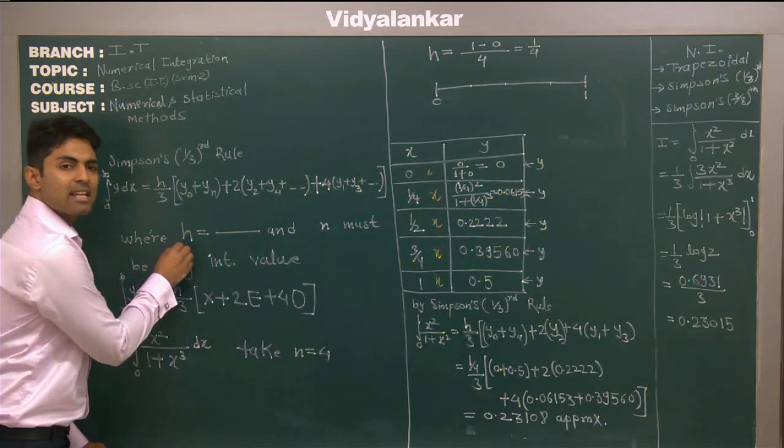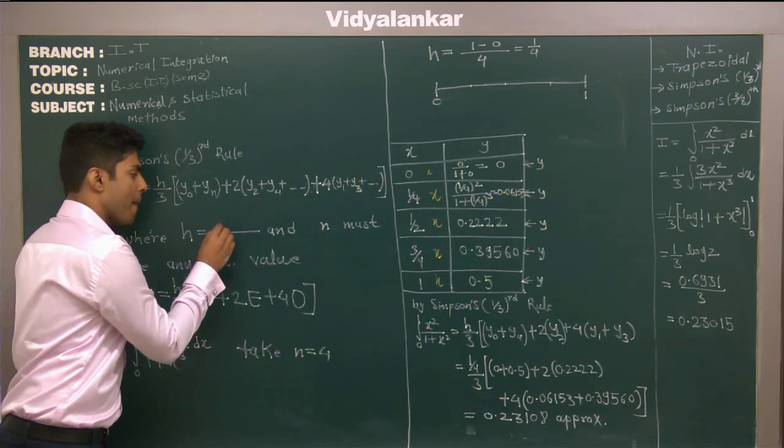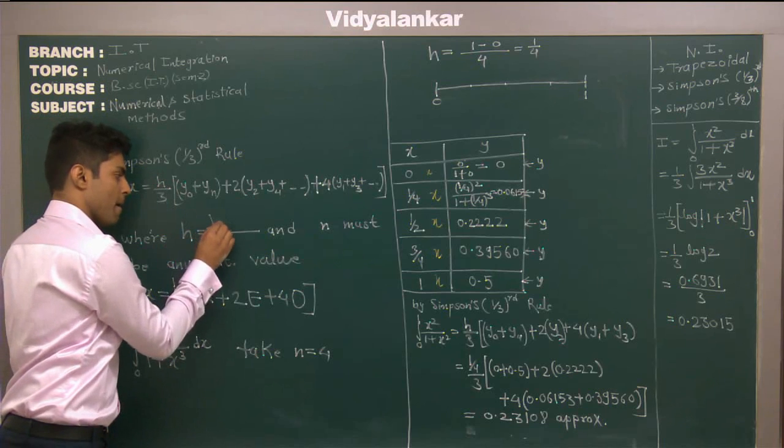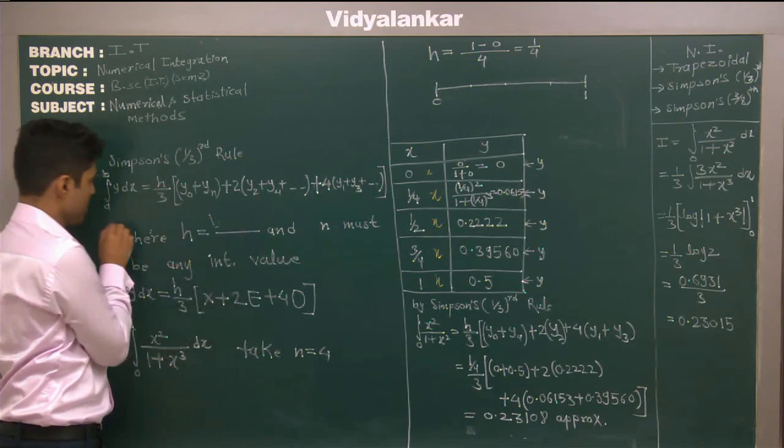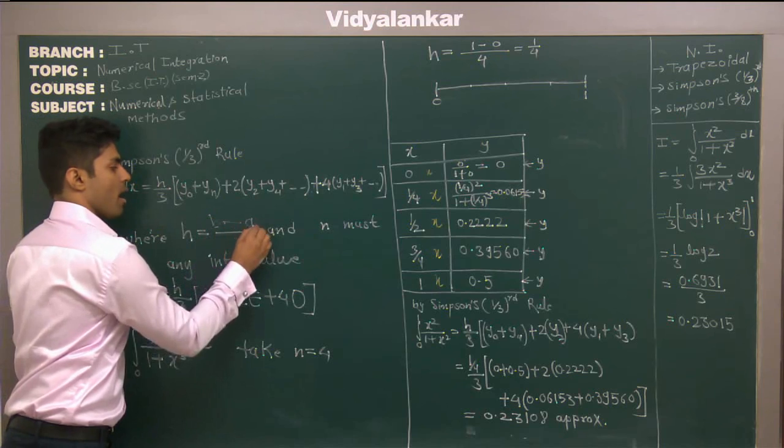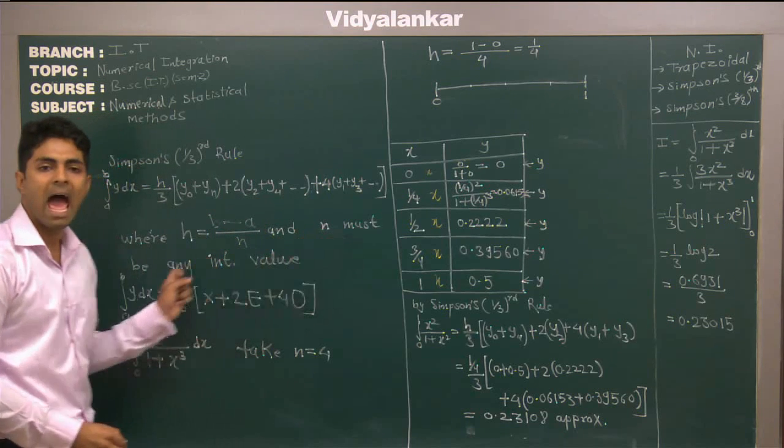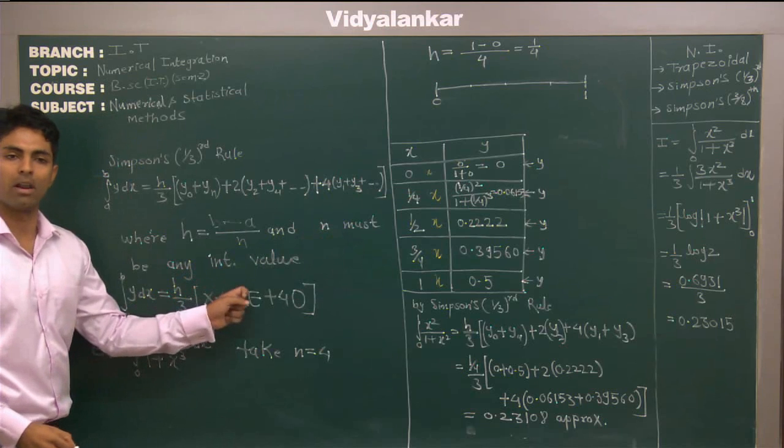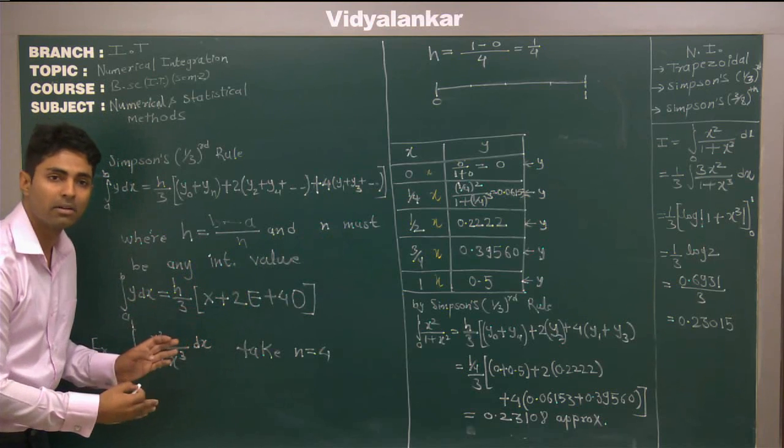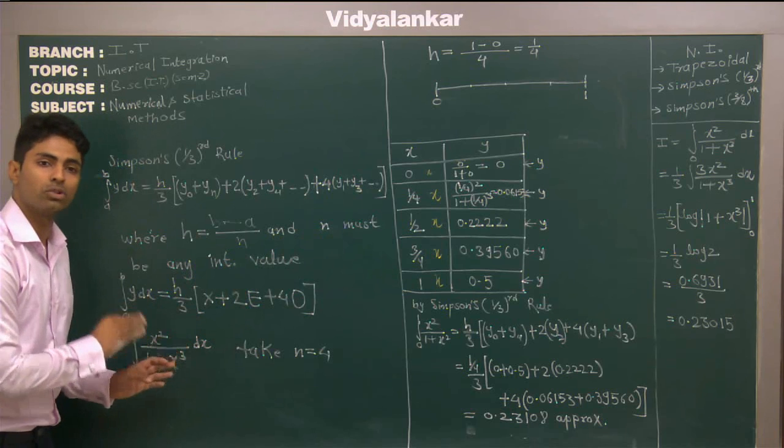Where h is nothing but upper limit b minus lower limit a upon n, where n must be any integer value. This n is nothing but your sub interval which is given in a question.